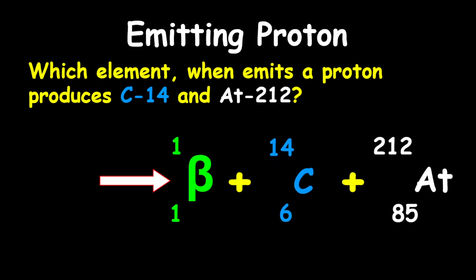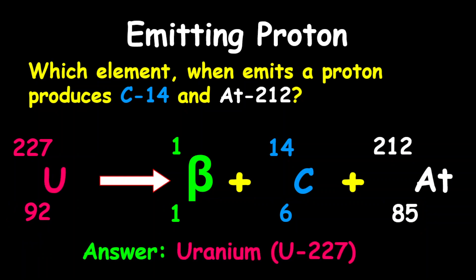Now to determine the element, what we are going to do is add all these masses, and so therefore we get 227. Adding all the protons, what we will get here is 92. So therefore the element is uranium-227.